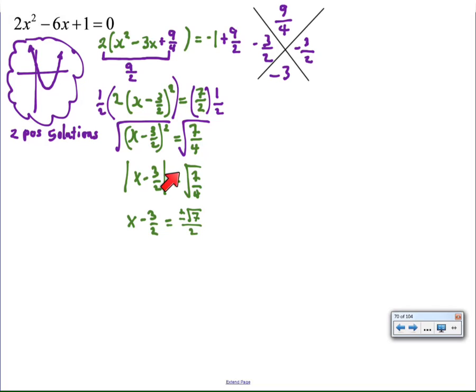I also took the square root of 7 fourths and made it the square root of 7 divided by 2. What's implied there is we're able to take the square root of the numerator and the denominator separately. Perhaps later we'll understand why we can do that, but all I know is every time I do this, I still get right answers, so it must be true. Finally, I'm going to add three halves to both sides and get the solutions that you see.